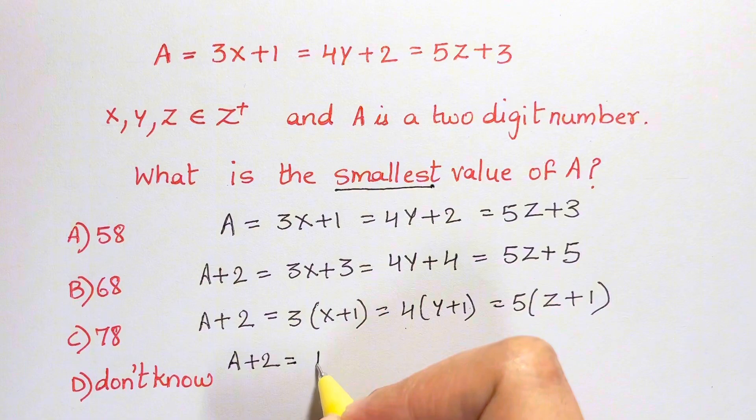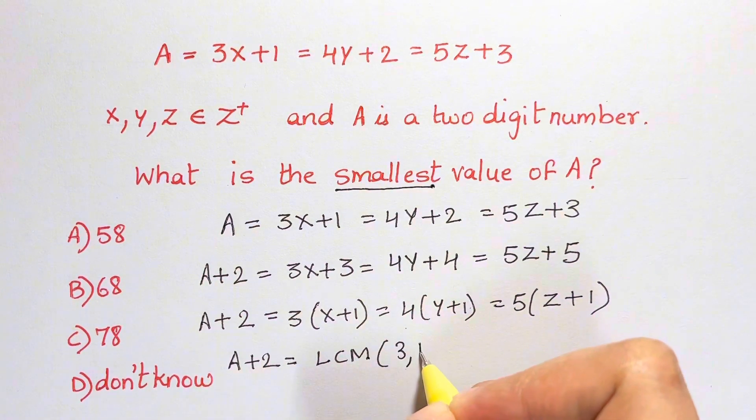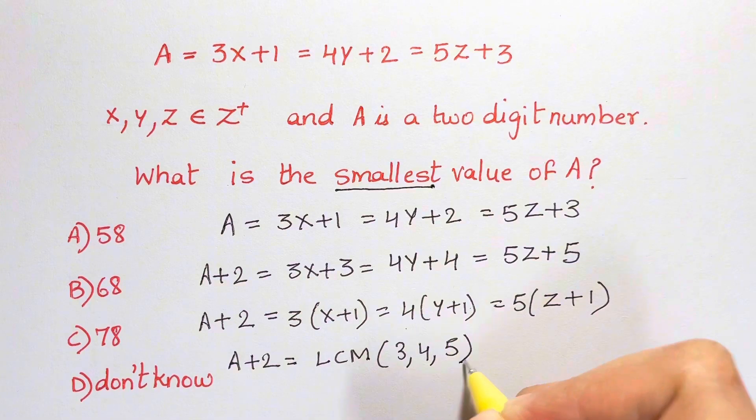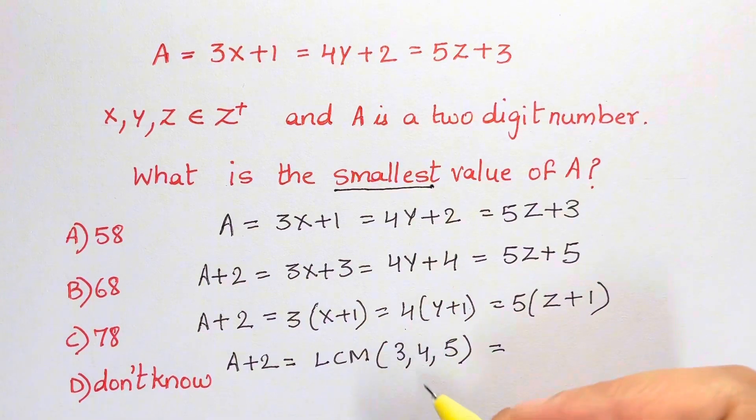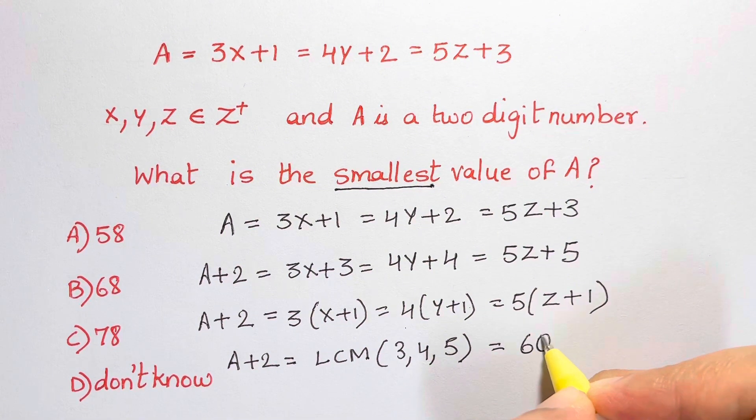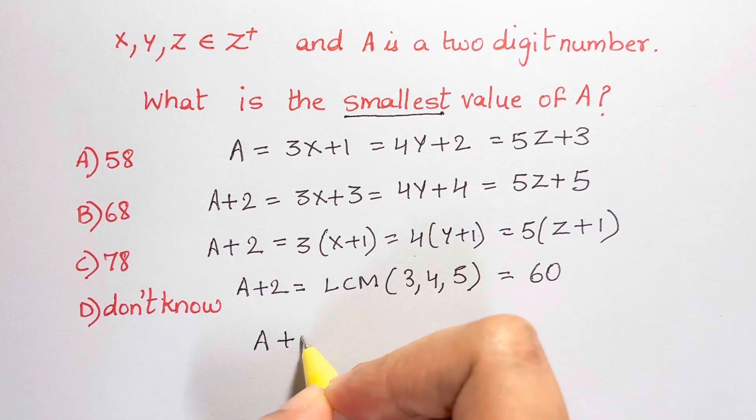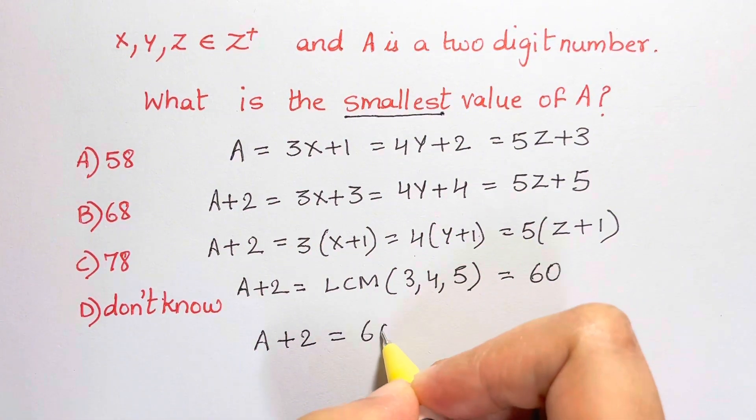LCM of 3, 4, and 5. So that's equal to 3 times 4 is 12, 12 times 5 is 60. So LCM is 60. We have our answer here: A plus 2 is equal to 60.